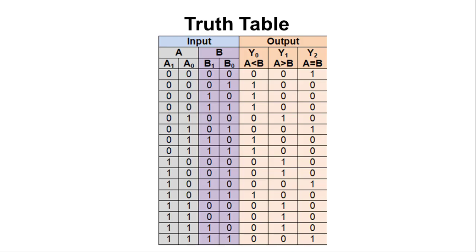In the third case, A is 01 and B is 00. Since 01 is 1 and 00 is 0, A is greater than B, so y1 will be high. In order to design the circuit, we need to draw three K-maps: one each for y0, y1, and y2.